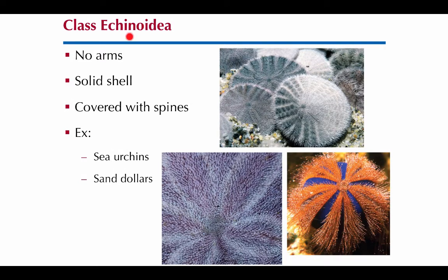Echinoidea — echino again means spiny — these are sea urchins, which many people know have poisonous spines in many cases, and also sand dollars. When you see a sand dollar you're only seeing the endoskeleton — they're actually covered with that thin skin and you can see all these little tube feet on them. These guys have calcareous plates that are fused together, versus sea stars which are more flexible. That's what I mean by solid shell — they don't have arms but they do have those tube feet.